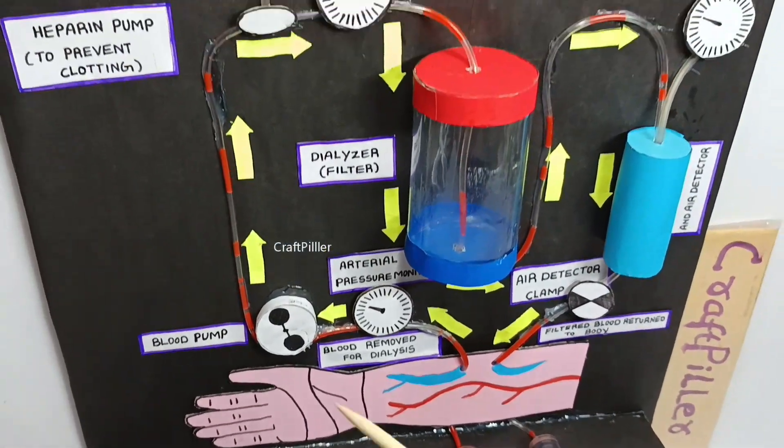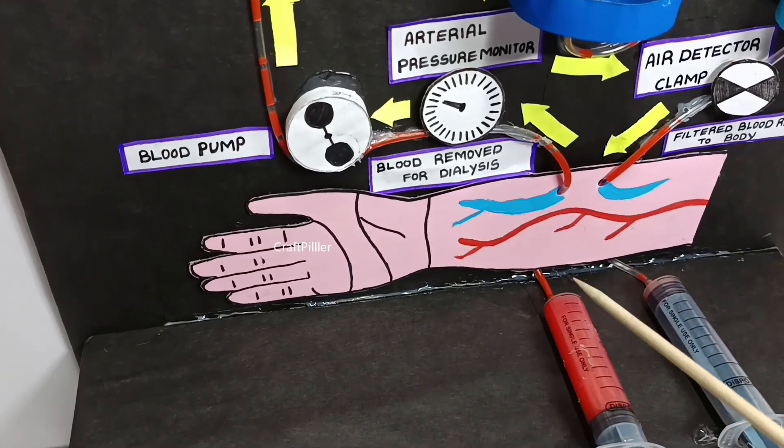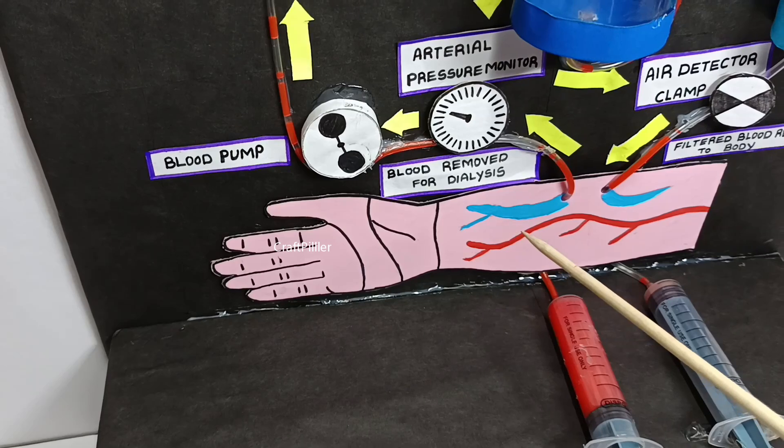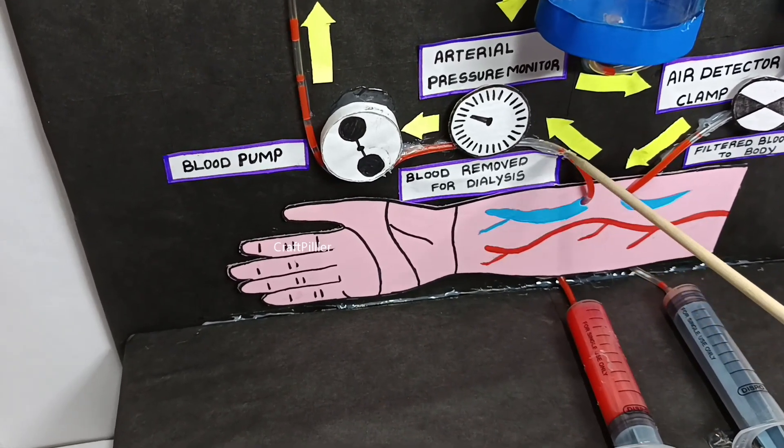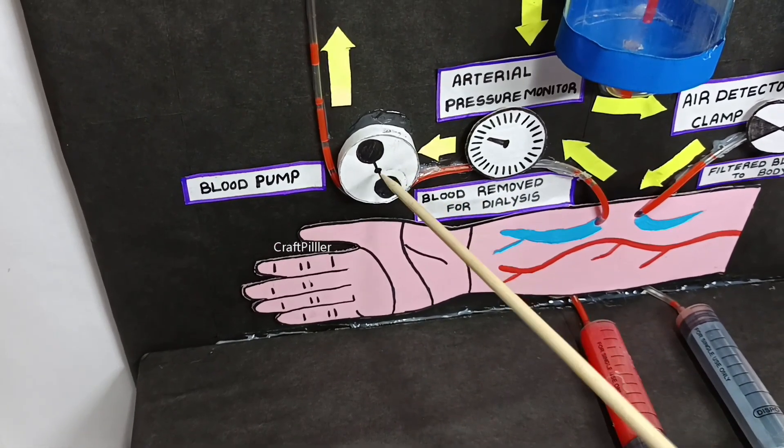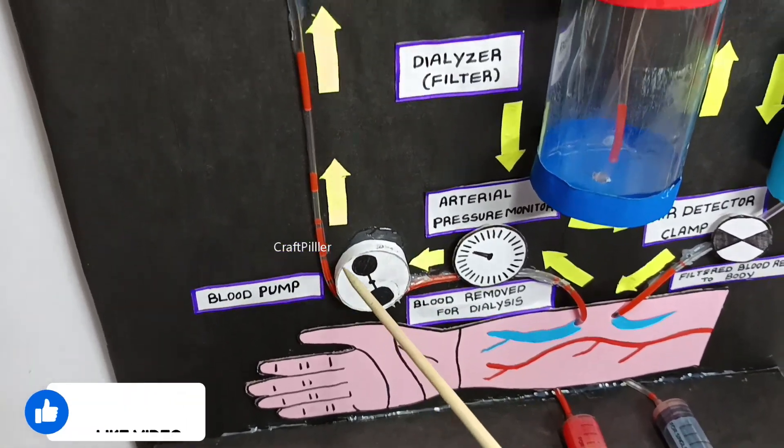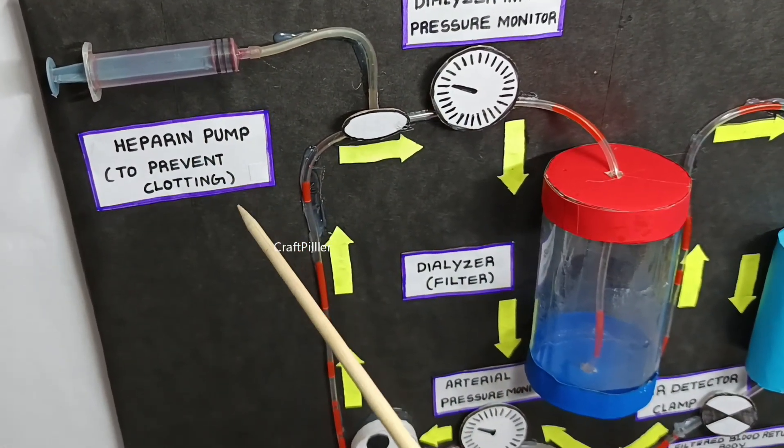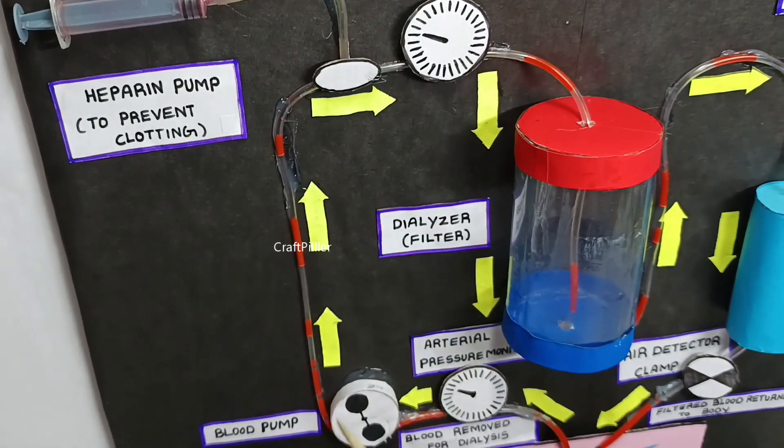The flow of the dialyzer is something like this. So basically here the blood will be extracted from the human body via these veins, and the same blood is going to pump by using this blood pump. When blood is pumping, there is a heparin pump also that is going to ensure there is no clot in this blood.